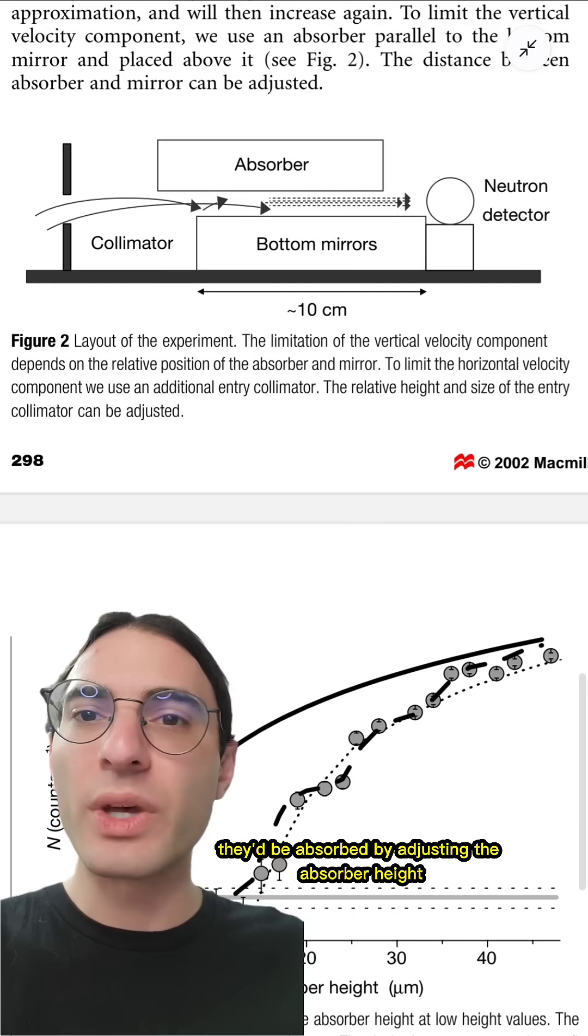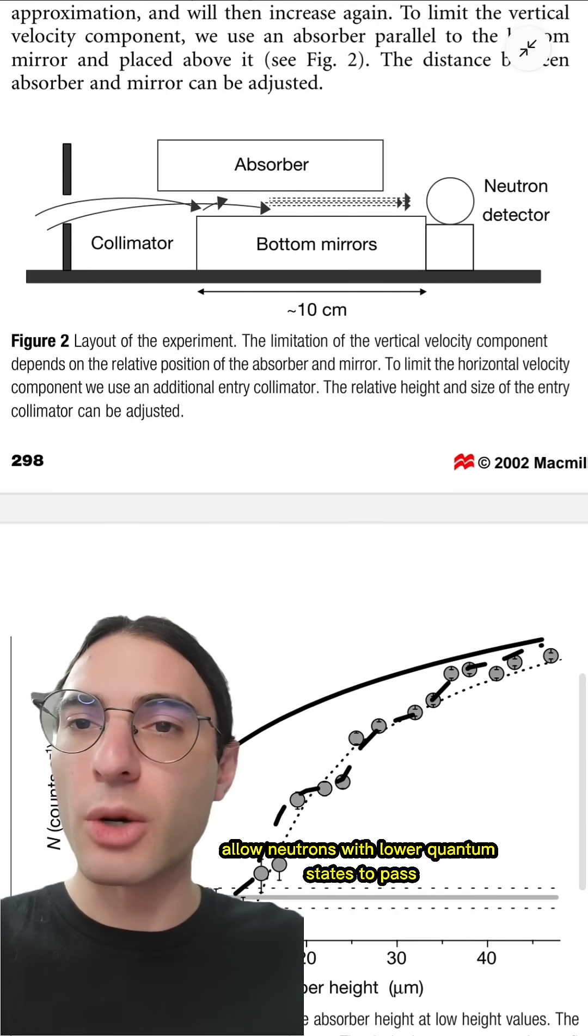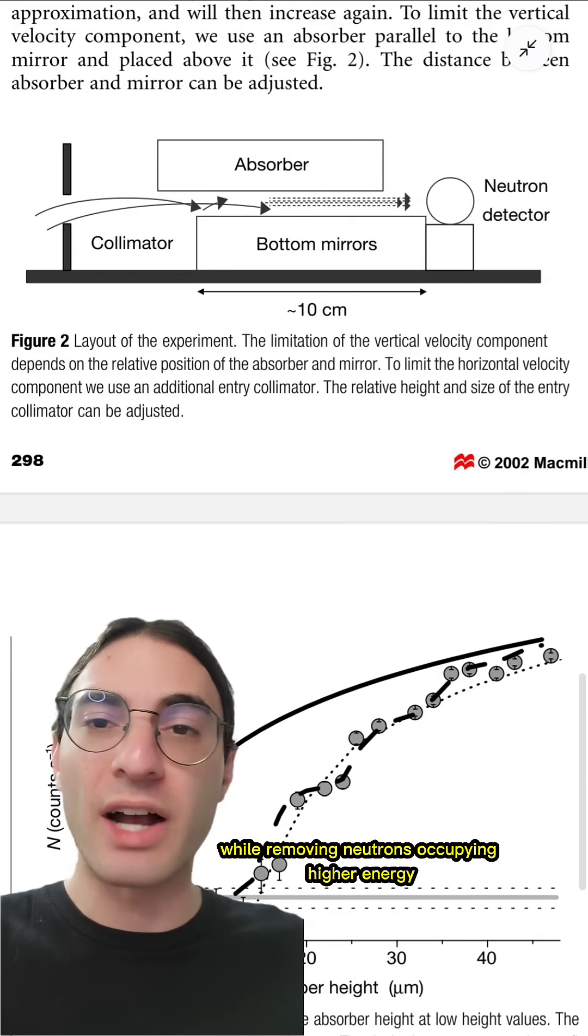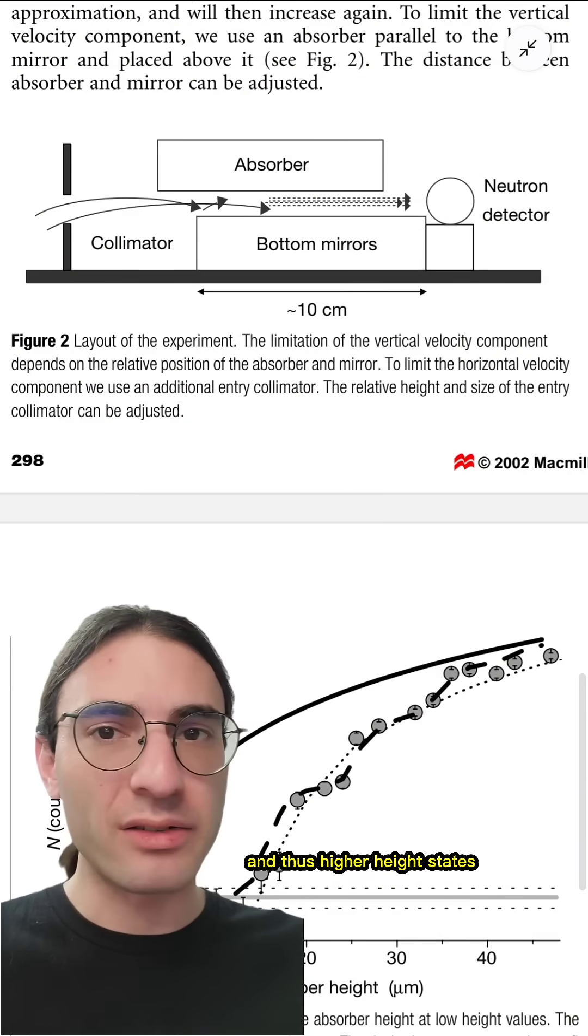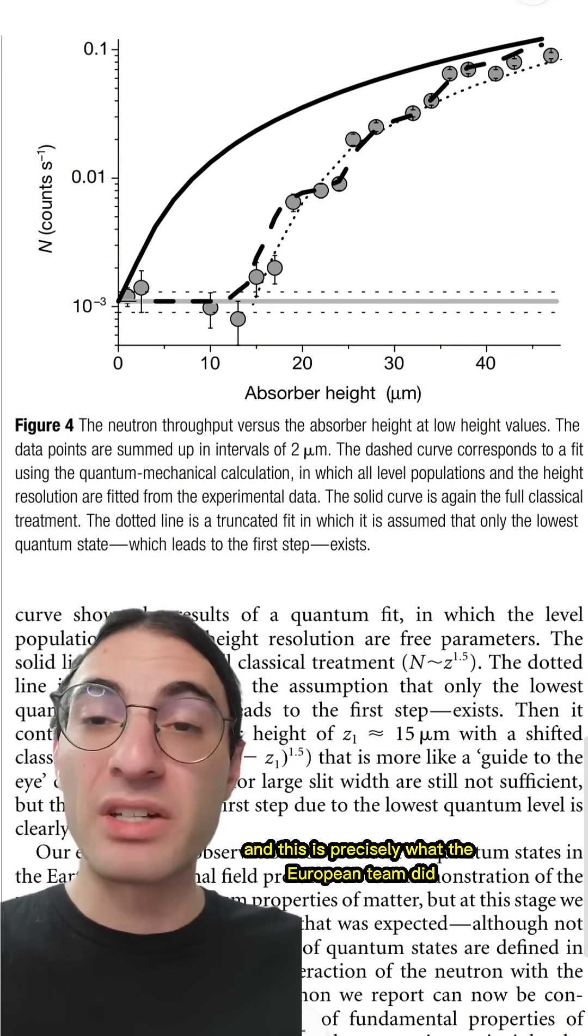By adjusting the absorber height, we could then selectively allow neutrons with lower quantum states to pass while removing neutrons occupying higher energy, and thus higher height, states. And this is precisely what the European team did.